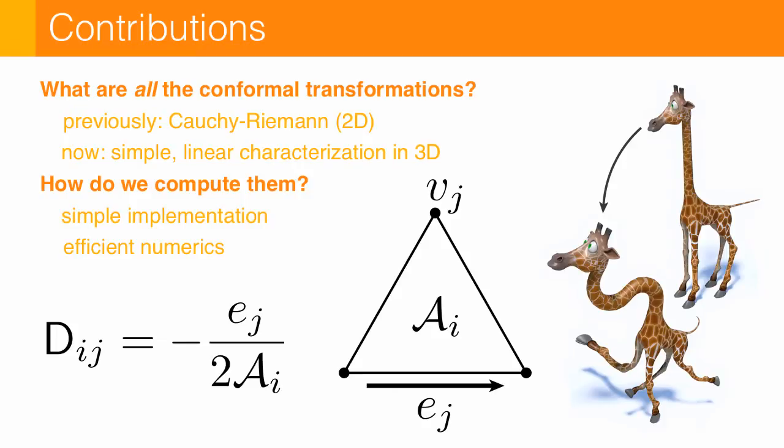But a natural question to ask at this point is, why are we so interested in conformal transformations? Well, one way to sort of categorize different types of transformations is to take a look at what happens to tangent planes as we deform our surface.